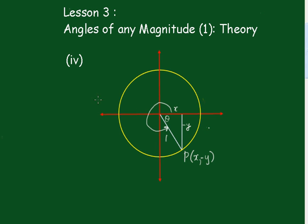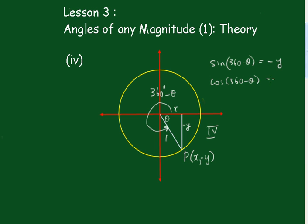Finally, in the fourth quadrant, this angle here is 360 degrees minus Theta. The sine of 360 degrees minus Theta equals minus Y on 1, or minus Y. The cos of 360 minus Theta is equal to just X. And the tan of 360 minus Theta is equal to minus Y on X. So in the fourth quadrant, the cos is the only one that is positive.